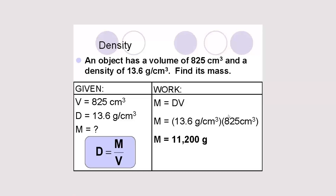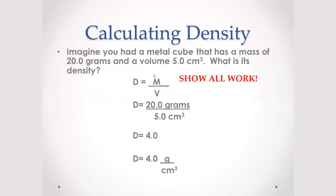This answer is correct because it has three significant figures, matching the given numbers. Now let's continue to the following exercise. Here we are going to calculate density. We have a metal cube with a mass of 20.0 grams and a volume of 5.0 cubic centimeters. Remember to show all work in order to receive all the credits — if you only put your answer and it is wrong, you get a zero.